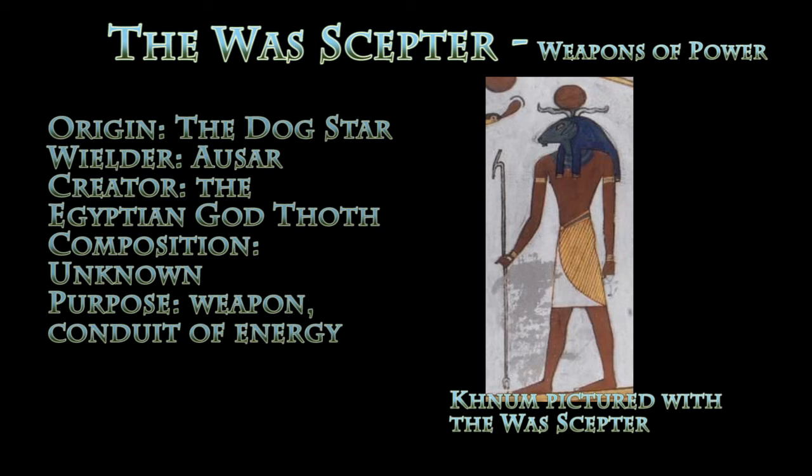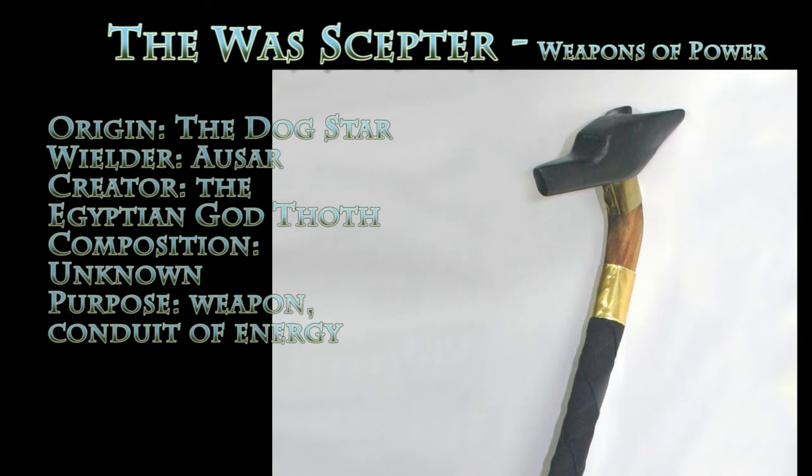That's the time that the Persians were allowed to come in and ultimately dominate Egypt, which led to the Greeks coming in and dominating Egypt later. So the lost scepter is a weapon of incredible power.